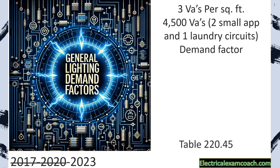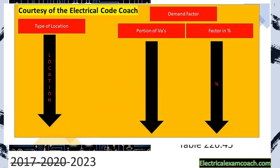We're going to head to table 220.45 for this. When we get there, the first thing we're going to do is read our table and make sure that we're in the right table. It says lighting load demand factors — I feel good about it. Now looking at the table, we read all of our tables from top to bottom, left to right, using our black bold headings to navigate the table.